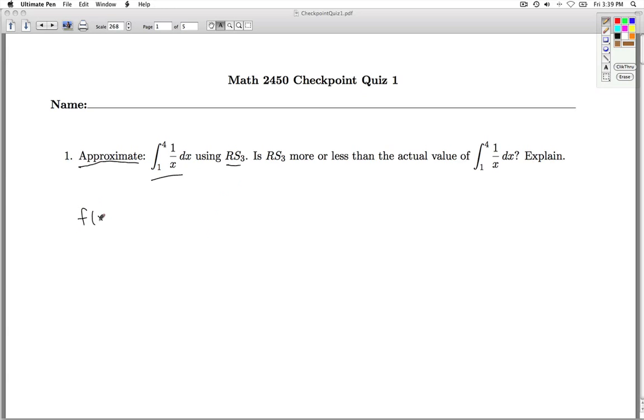The function we have here, f of x, is 1 over x, and so let's get a picture of what's going on. Let's graph y equals 1 over x from 1 to 4.